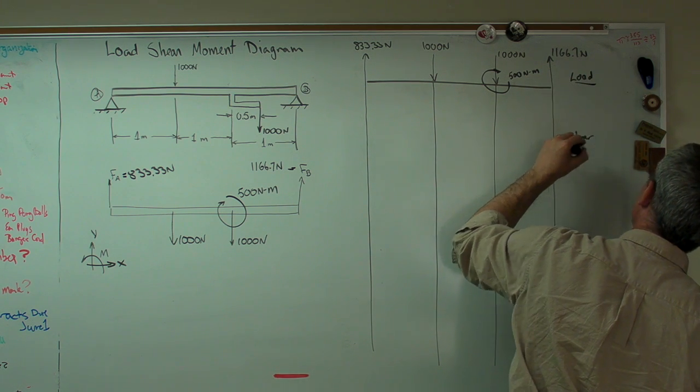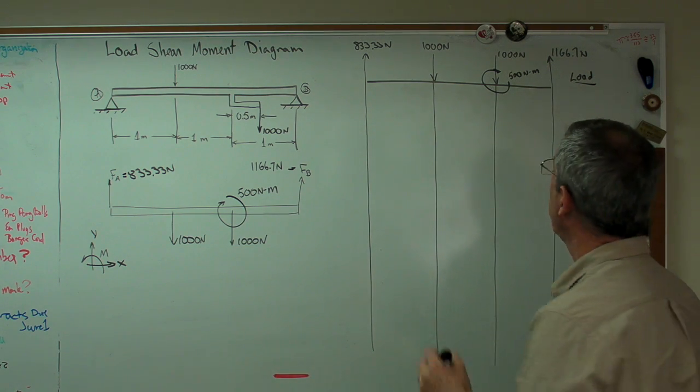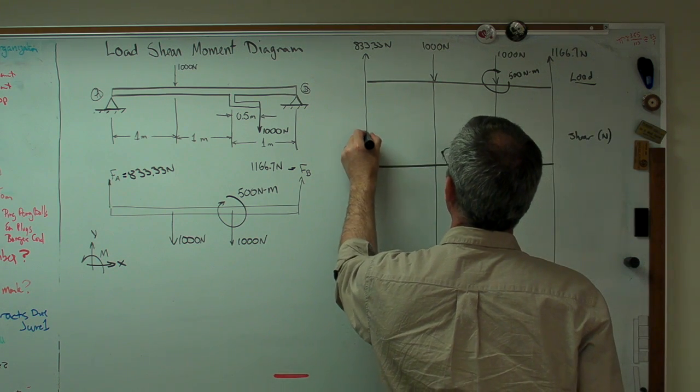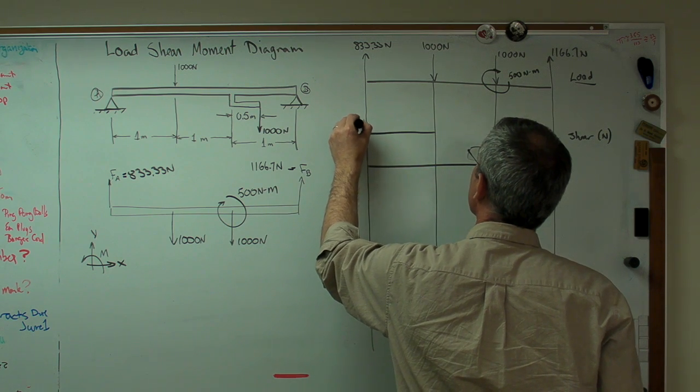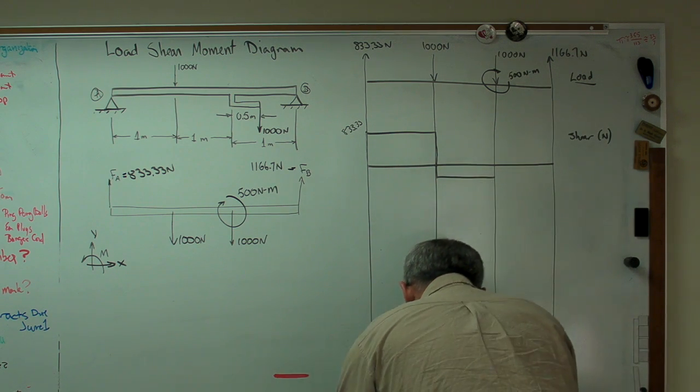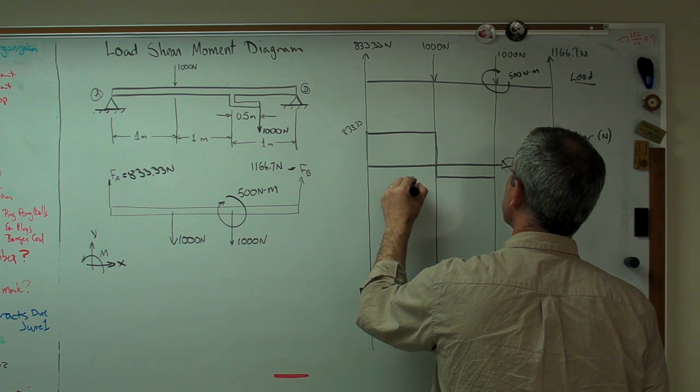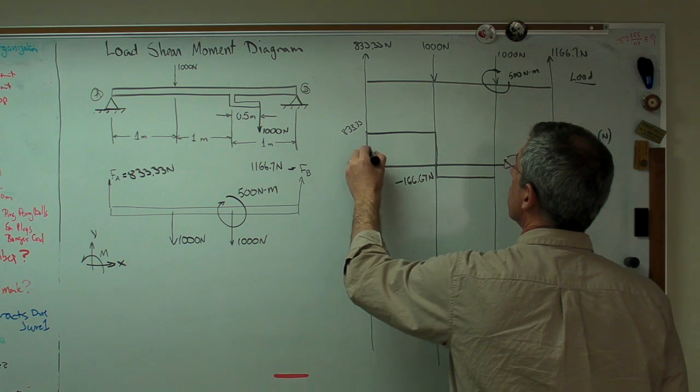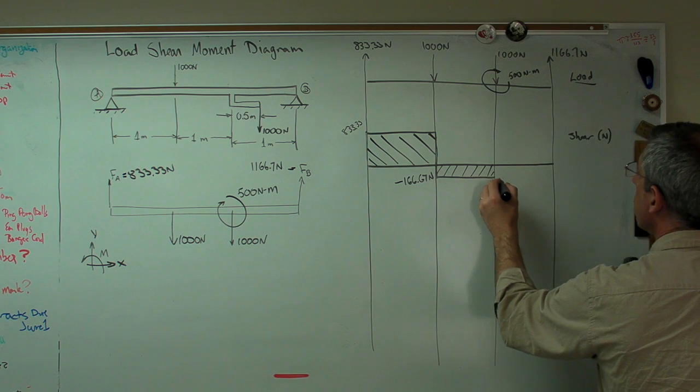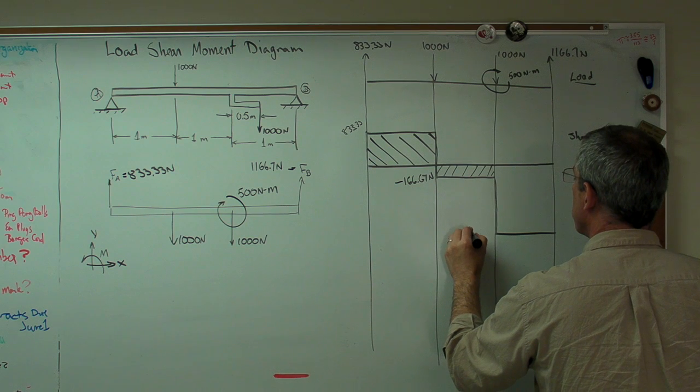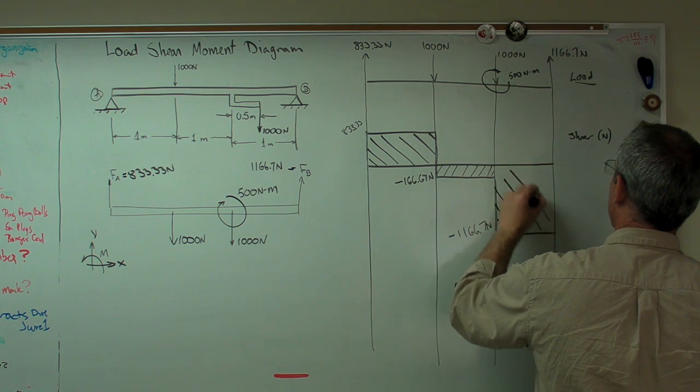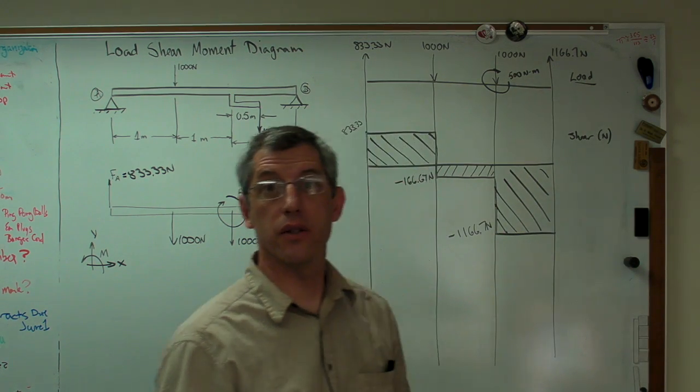The shear part, this is going to be in newtons, is next. And we're going to work from left to right. We're going to go up where the load tells us to go up and down where it tells us to go down. So I'm going to go up 833.33. Now I'm going to go down 1,000. This tells me to go down. So when I do that, I'm going to go down a little bit below zero, and that works out to be minus 166.67 newtons. And this last one tells us to go down another 1,000 to minus 1166.7. And that force brings us back to zero again. So we're in good shape there.